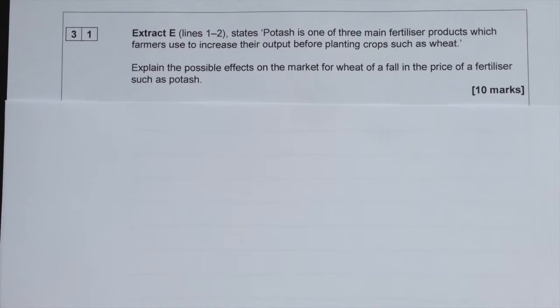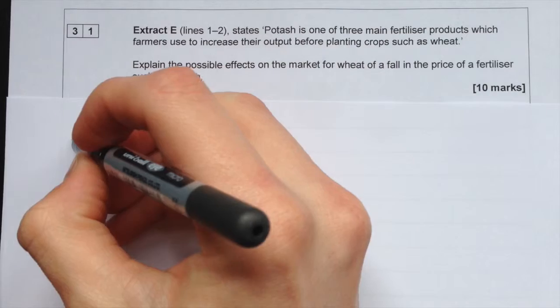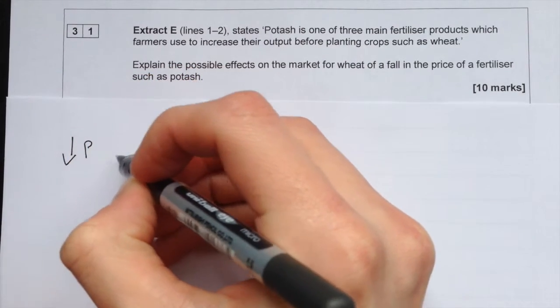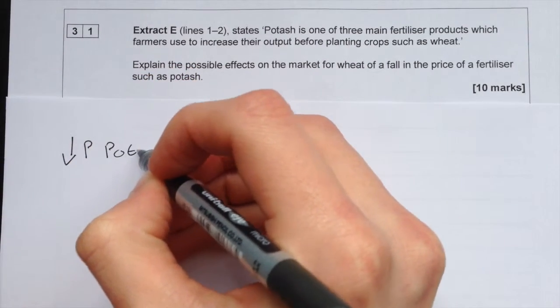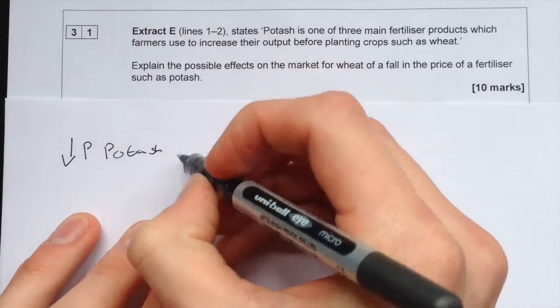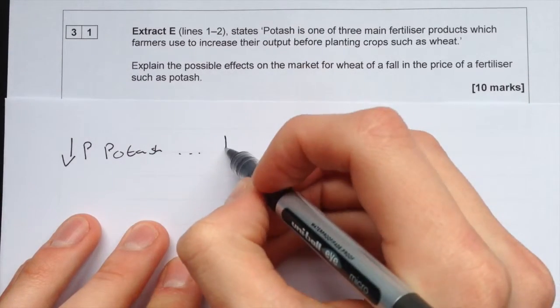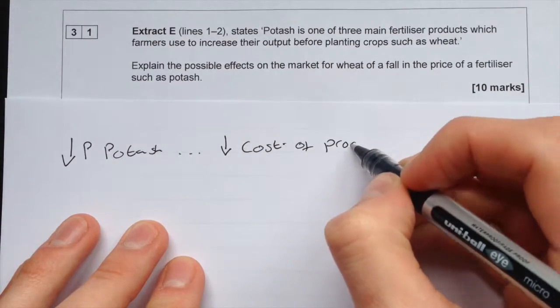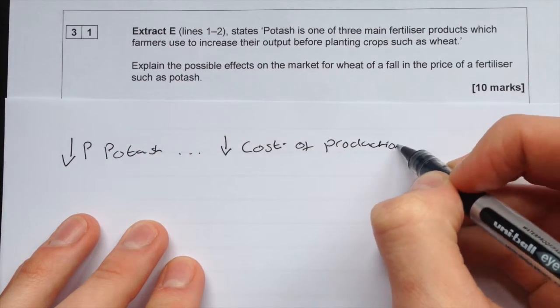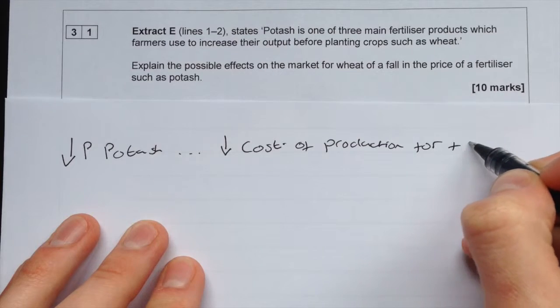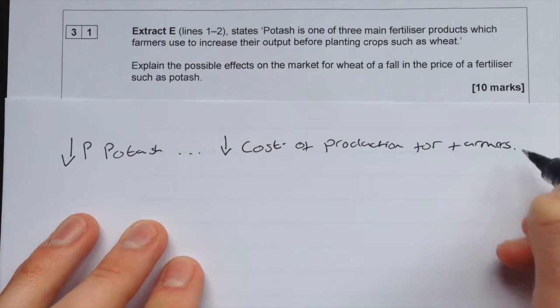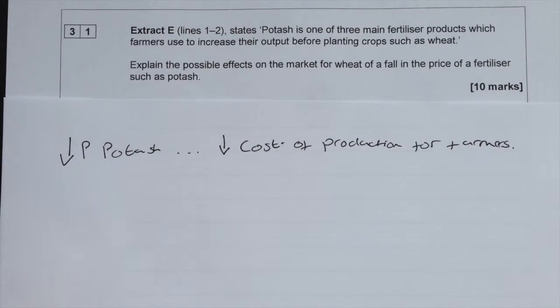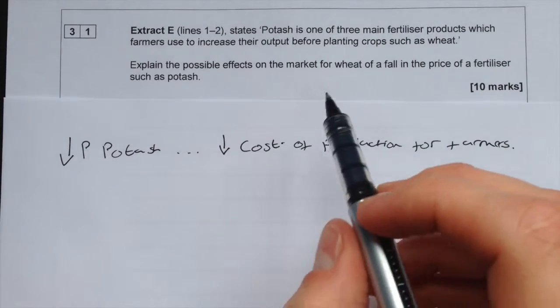If there's a decrease in the price of potash, then it decreases the cost of production for farmers. This makes it cheaper for farmers to supply wheat to the market.